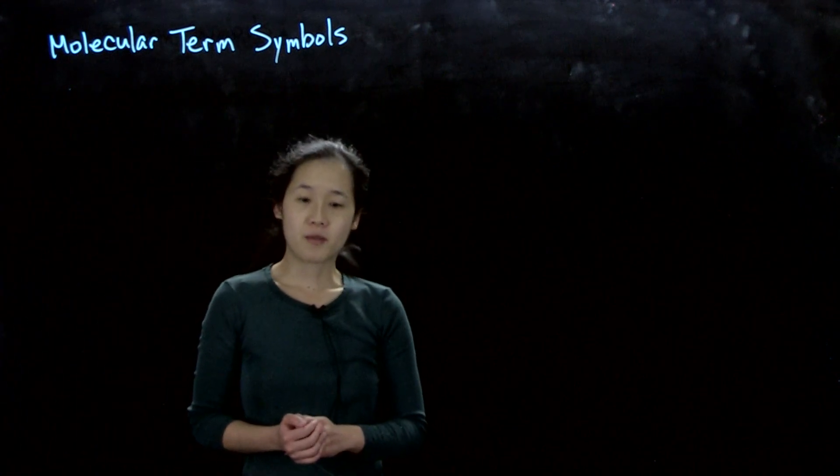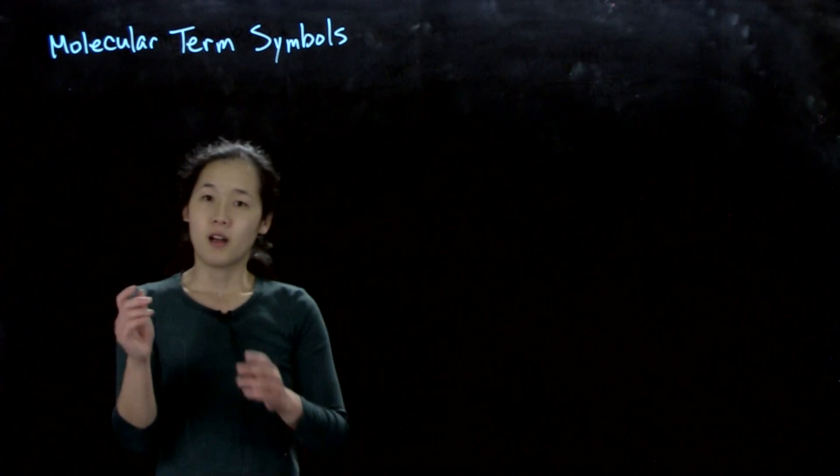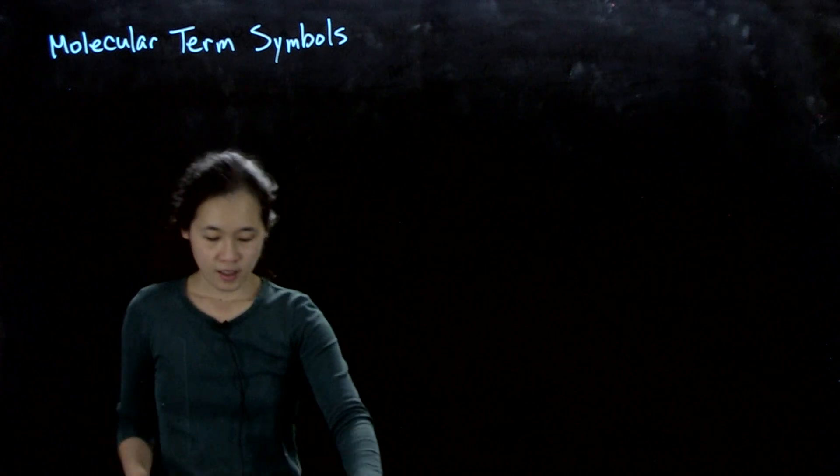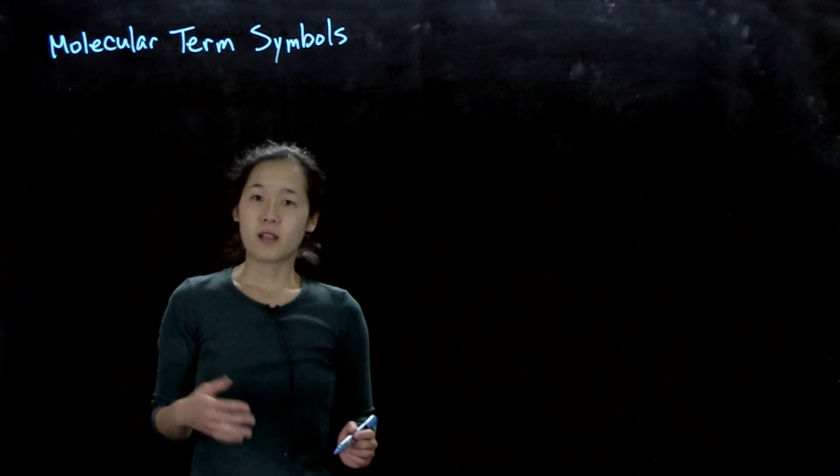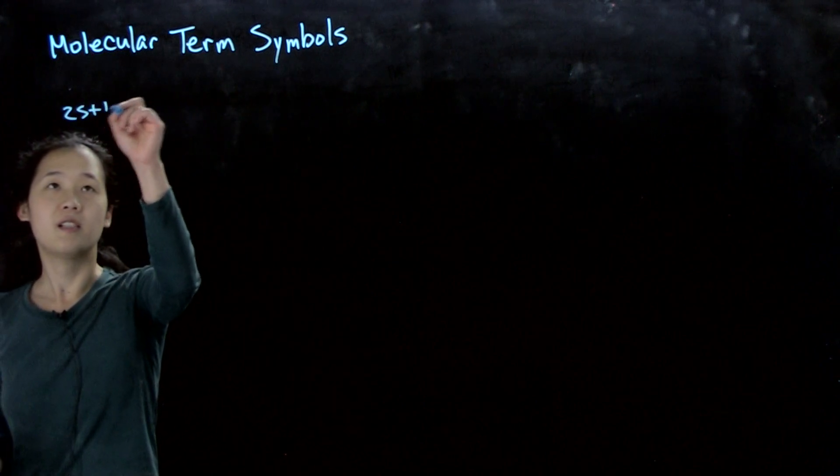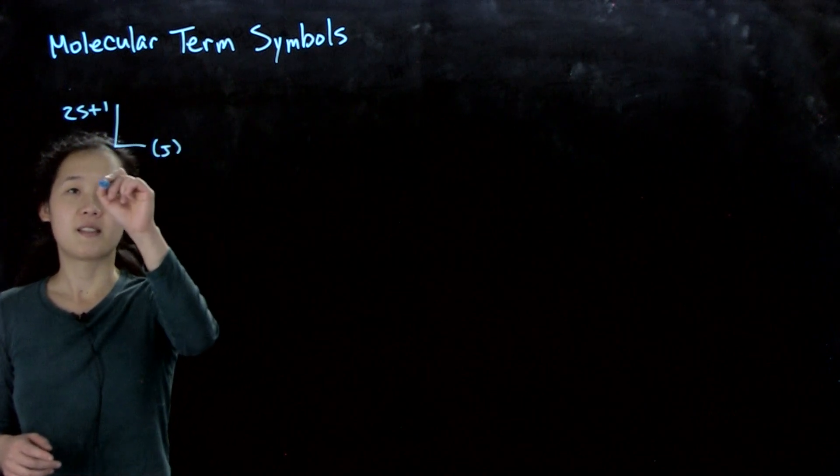So last time we did atomic term symbols, and this time let's talk about what happens when we put the free atom and bind stuff to it. We put a transition metal in a ligand field. So instead of doing the Russell Saunders scheme that we did last time, so atomic terms will remember 2s plus 1, L, this is our Russell Saunders, and then our J. So this is our atomic.